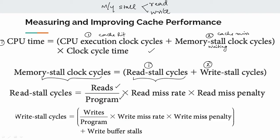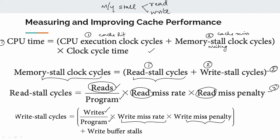So what do we do with the write stall cycle? This formula is equation 2 and equation 3. In equation 3, number of writes by program length into write miss rate into write miss penalty — this is the write stall cycle. There is also an additional write buffer stall. So if we use the write buffer, it is negligible. This is equation 4.